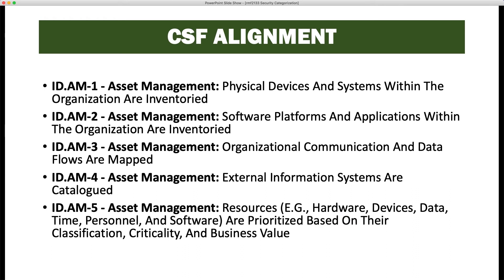It aligns with the Cybersecurity Framework as well. In ID.AM-1 asset management, physical devices and systems within the organization are inventoried. In ID.AM-2, software platforms and applications are inventoried. ID.AM-3 covers organizational communication and data flows being mapped. ID.AM-4 covers external information systems being catalogued. And ID.AM-5 covers resources including hardware, devices, data, time, personnel, and software being prioritized based on their classification, criticality, and business value.